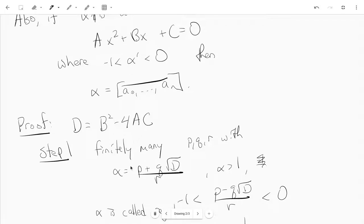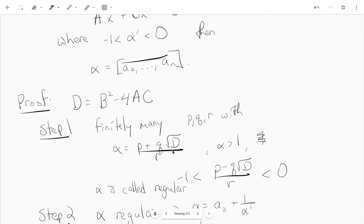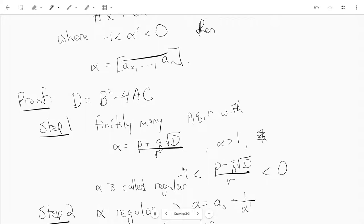and the first step is that you prove that there are finitely many alphas of this form whose conjugate lie between negative 1 and 0.